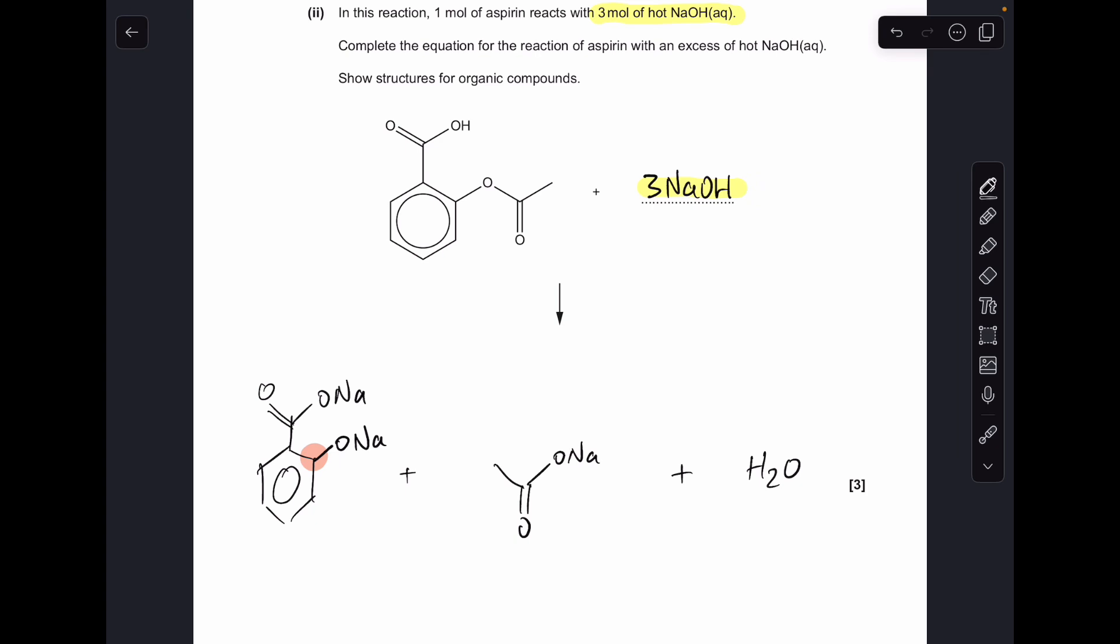We need to think about how many waters are going to form. I've found the easiest way to balance this is just to look at the oxygens. You can see in the reactants we've got one, two, three, four, five, six, seven oxygens. Then if we just look at the organic products for the oxygens, we've got one, two, three, four, five. So we'll need two more: 2 H₂O.